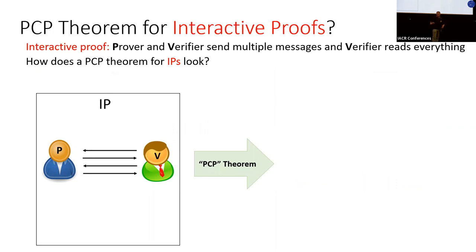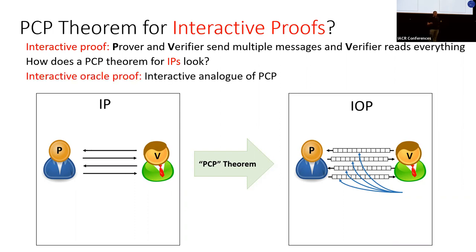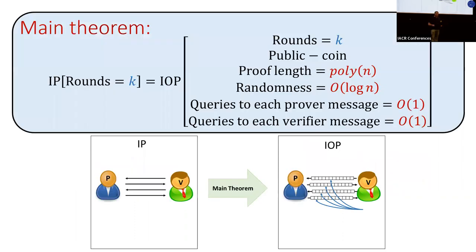In this paper we ask: how would a PCP theorem look for interactive proofs? We'd encode each one of the messages in some way, then have local access to each one of the messages both from the verifier and from the prover. This object is called an Interactive Oracle Proof, or IOP — the interactive analog of a PCP.